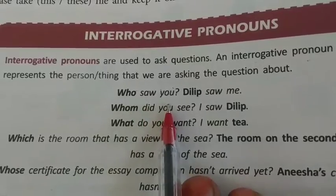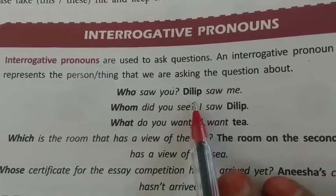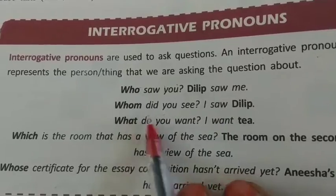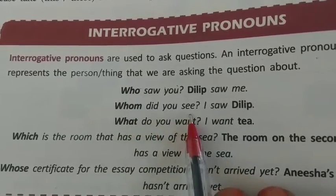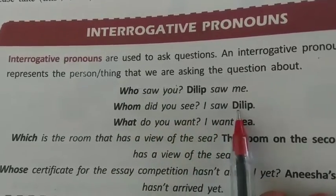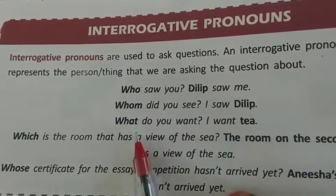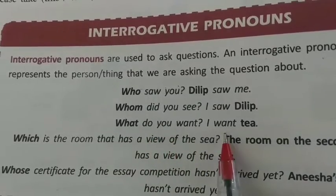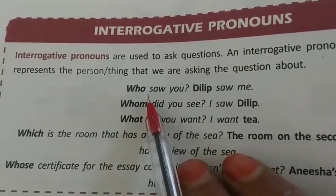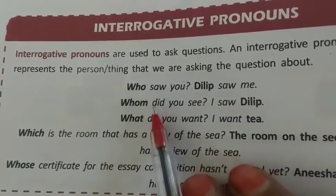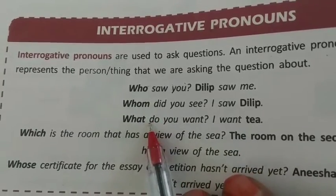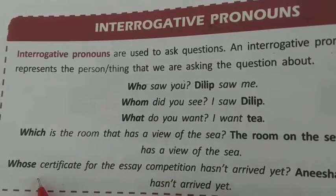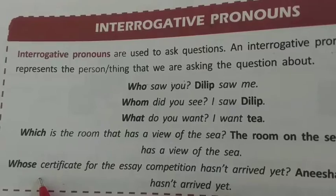For example: 'Who saw you?' (तुमको किसने देखा?) - Dilip saw me. 'Whom did you see?' (तुमने किसको देखा?) - I saw Dilip. 'What do you want?' (तुम क्या चाहते हो?) - I want tea. So the interrogative pronouns are: who (कौन), whom (किसको), what (क्या), which (कौन सा), and whose (किसका या किसकी).